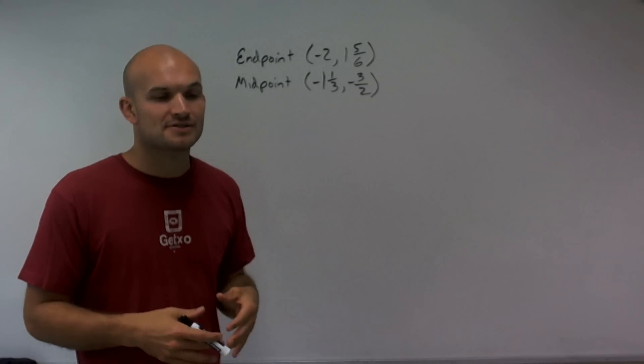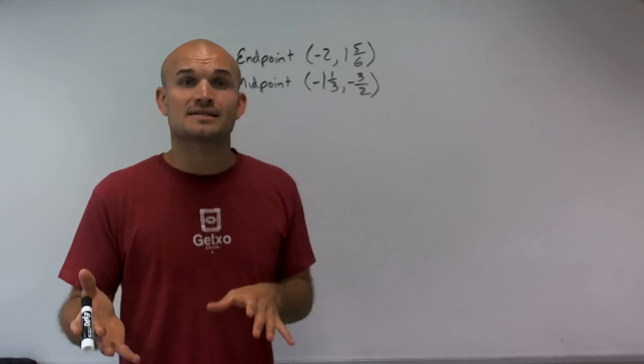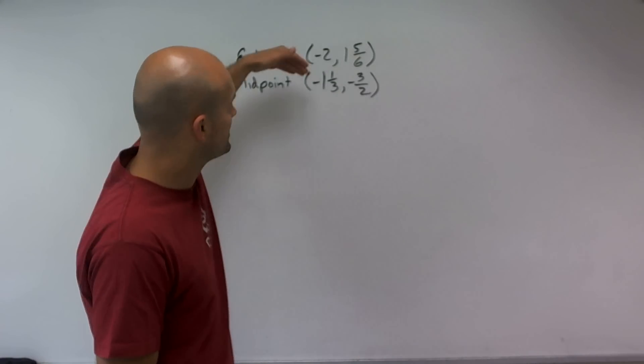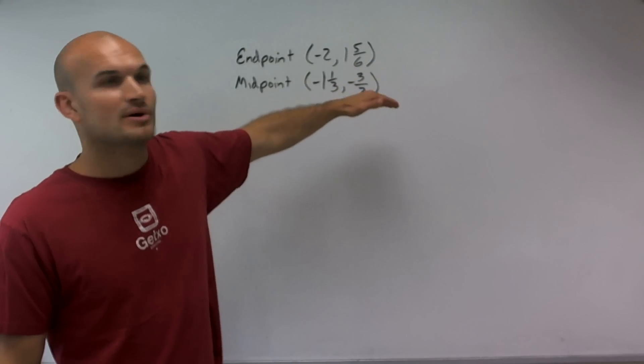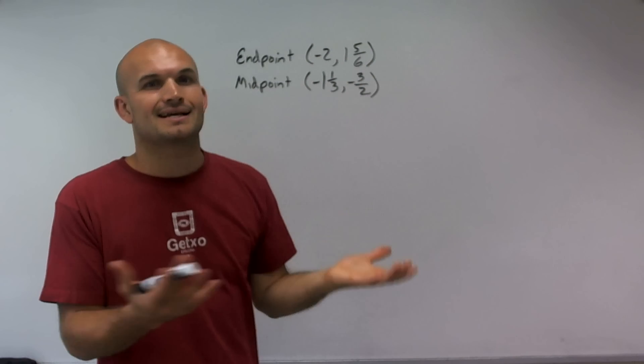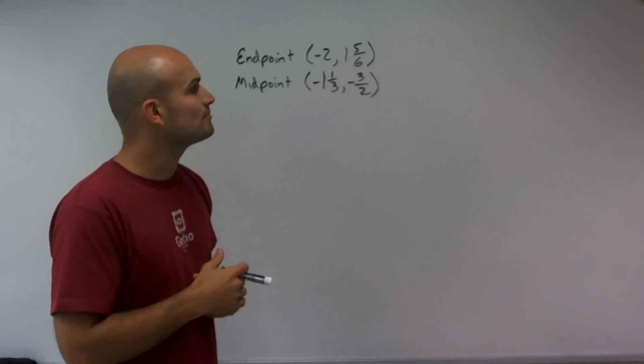The reason why I want to use improper fractions is because it's very easy for me to add and subtract fractions when I only have a denominator and a numerator. A lot of times with mixed numbers, they still won't have the same denominator with their fraction, and it can be very confusing. So a very helpful hint is to convert to improper fractions.